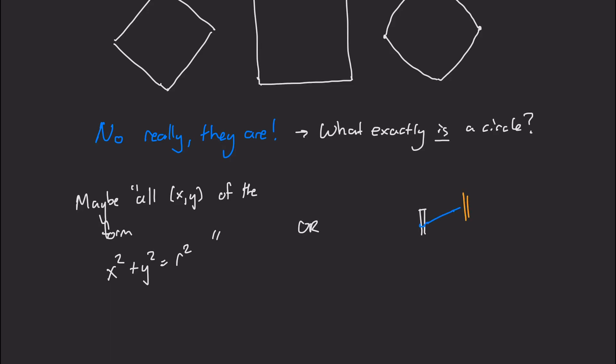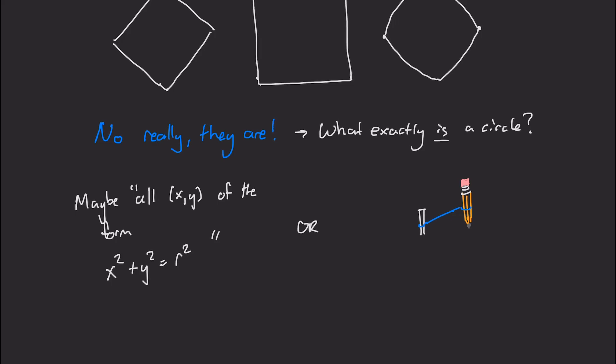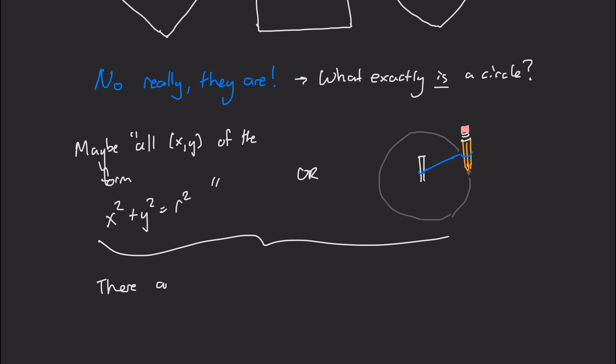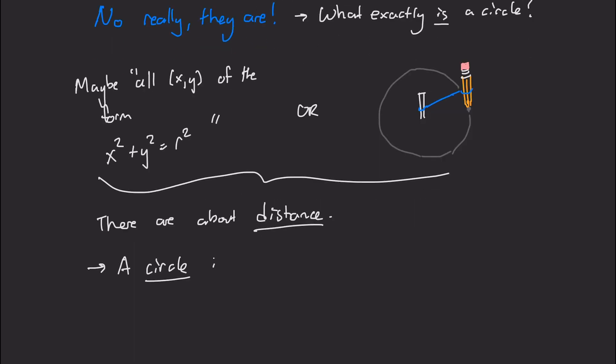Maybe one of the answers you might give is the set of all pairs x, y of the form x squared plus y squared equals r squared. Or maybe you describe how you would draw a circle. For example, maybe you stick a peg in a piece of paper, you attach it to a string, and you attach the other end to a pencil, and then you keep that string taut and twirl it around, and then you get a circle. I claim that both of these ideas are about distance.